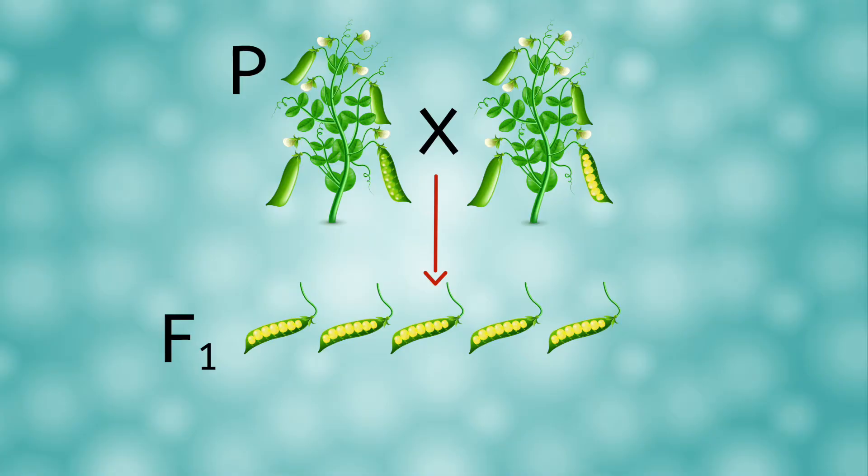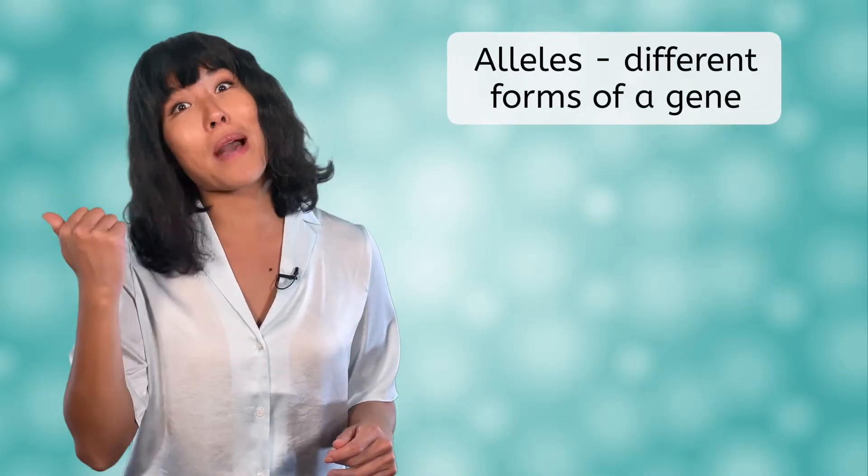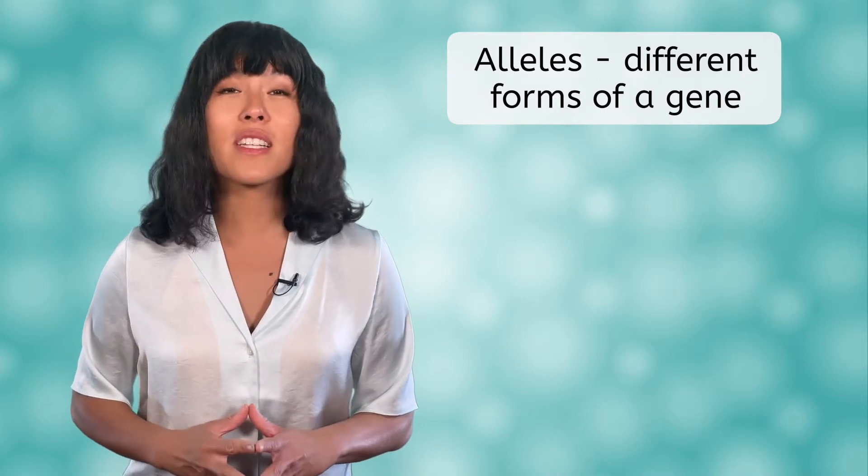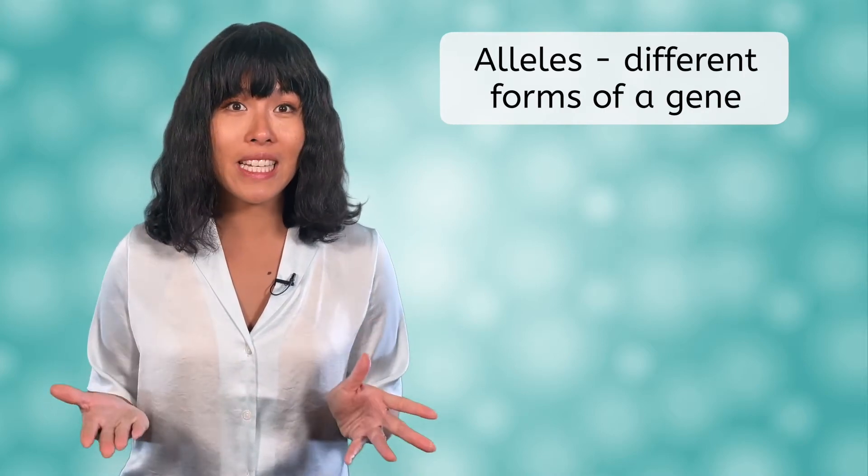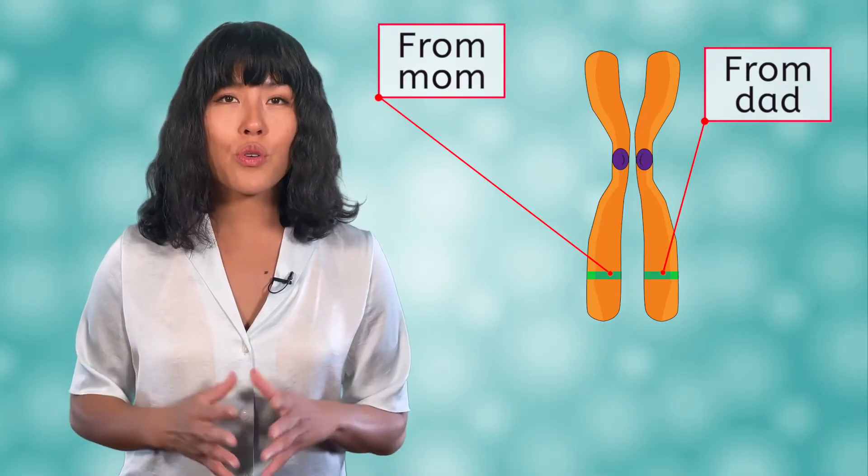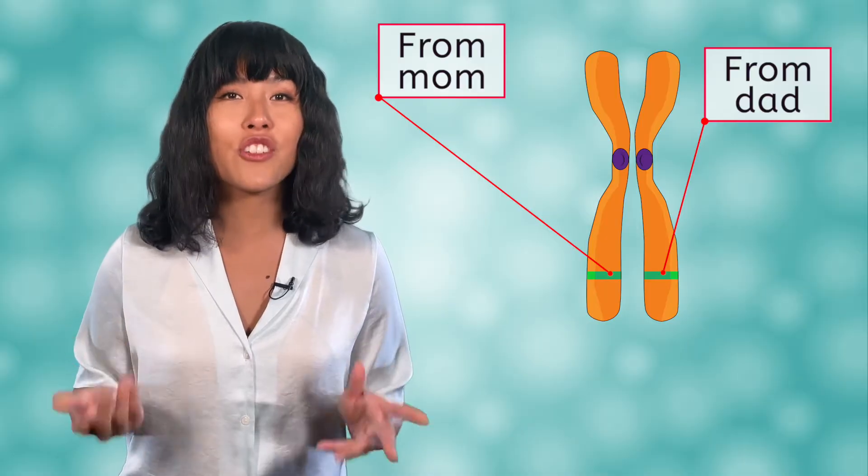Mendel decided that the green color was being masked by the yellow color and termed the yellow color dominant because it appeared to dominate the green color. We now use dominant to refer to the trait that will always be expressed if an allele for it is present. Do you remember what an allele is from way back in unit one? Alleles are the different forms of a gene. Remember that you get two copies of each gene, one from mom and one from dad, so you have two alleles for each gene.